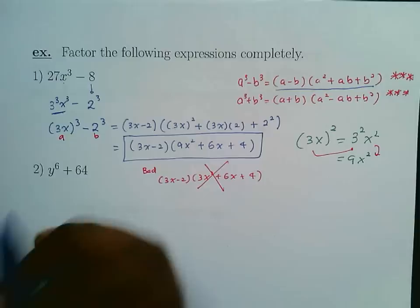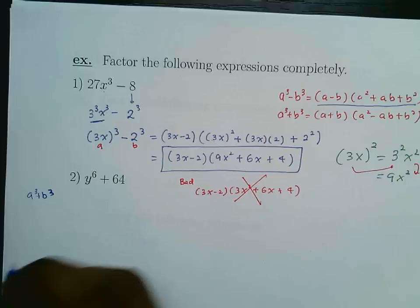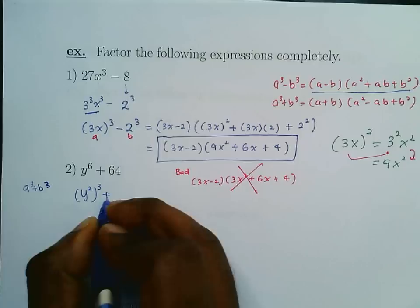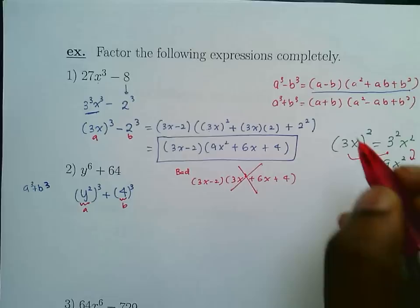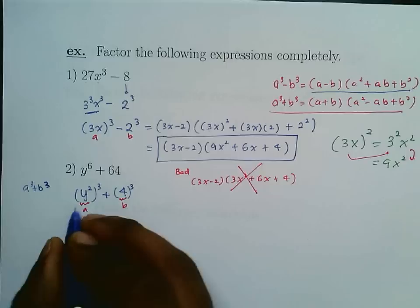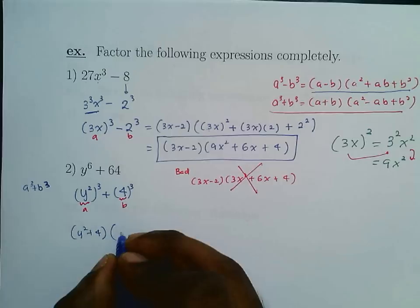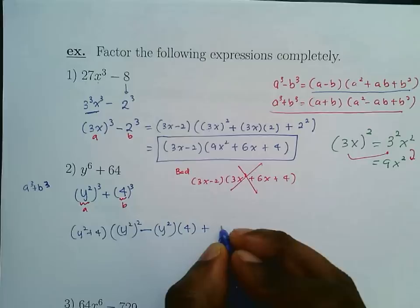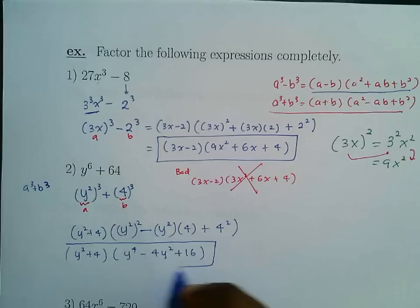The next example is a sum of two cubes: y⁶ + 64. Recognize that y⁶ = (y²)³ and 64 = 4³, so a = y² and b = 4. Using the sum formula: (a + b)(a² - ab + b²) = (y² + 4)((y²)² - (y²)(4) + 4²) = (y² + 4)(y⁴ - 4y² + 16). Using parentheses carefully is key here.